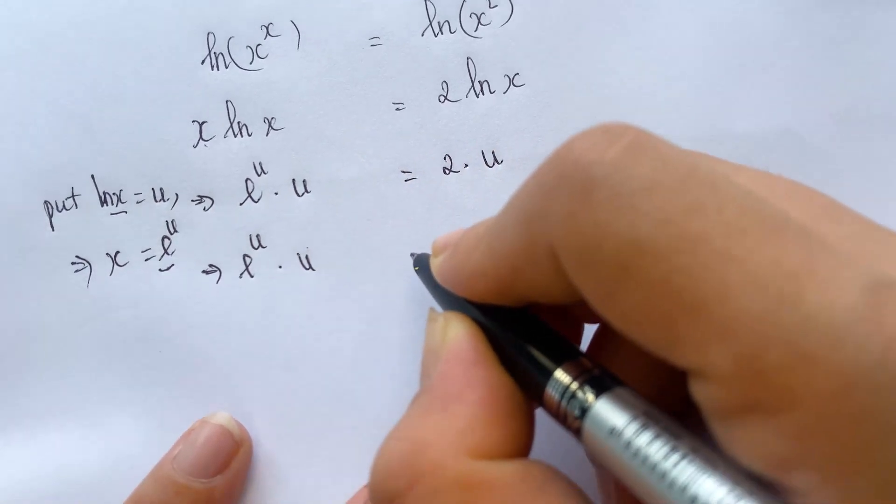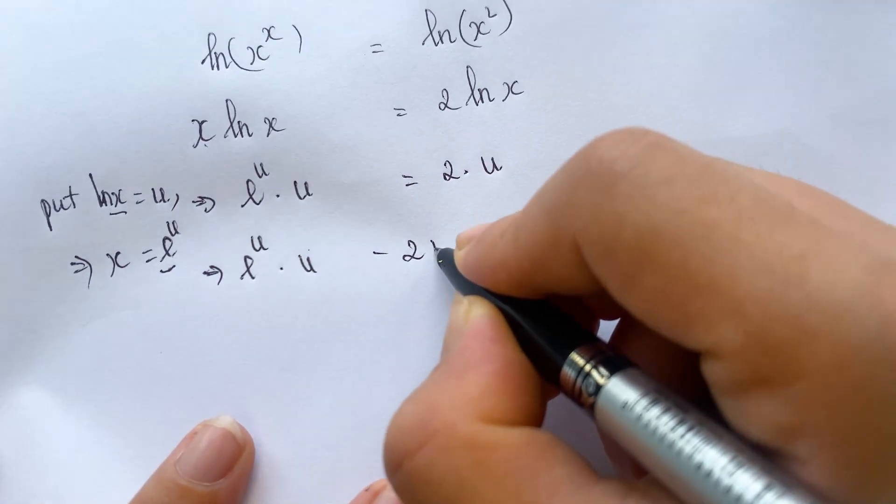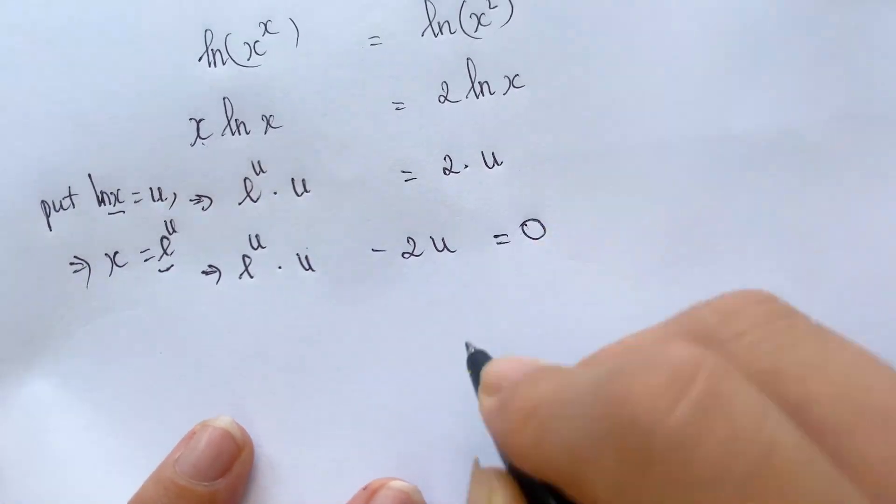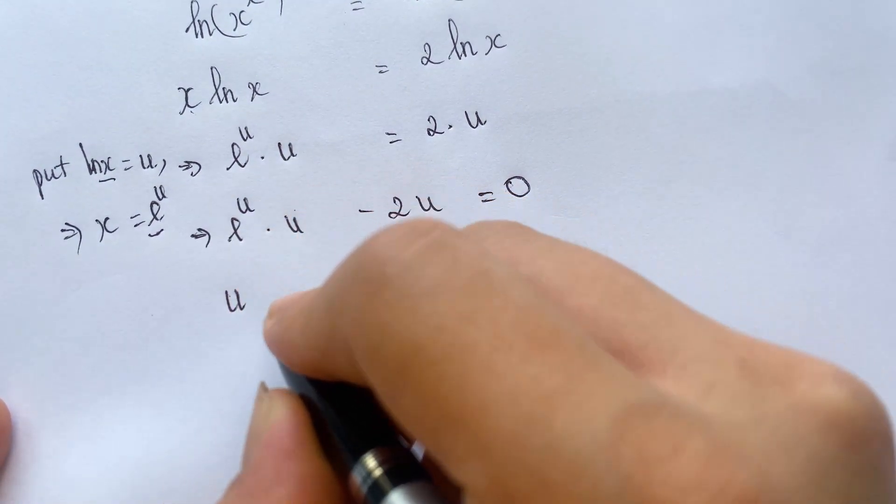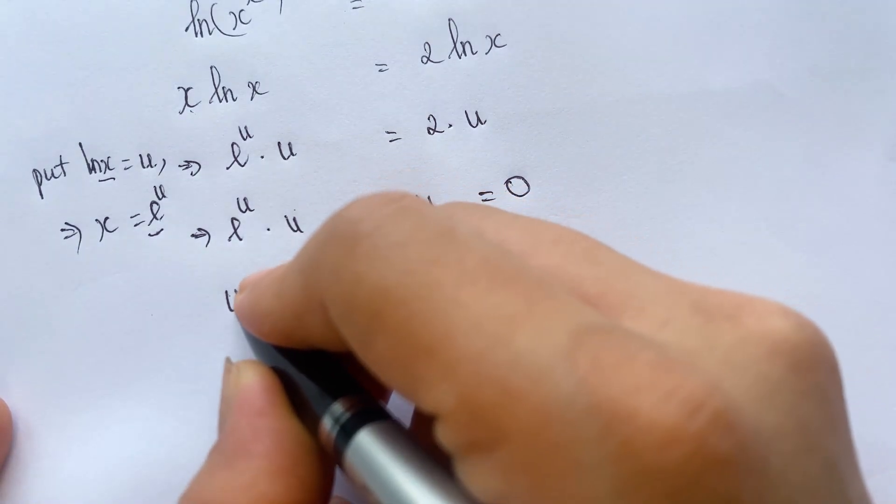And then everyone can see we can have e power u times u minus 2u equals 0. And then we can have a common factor.